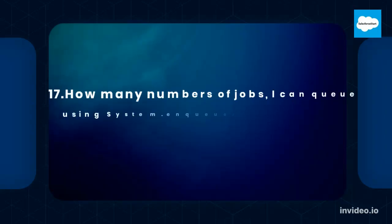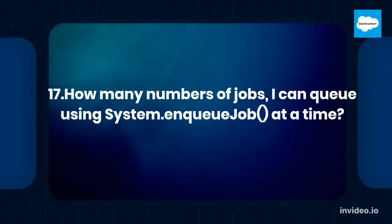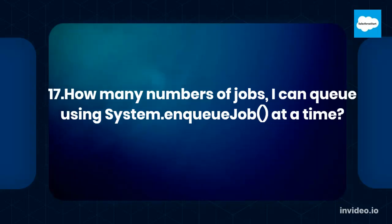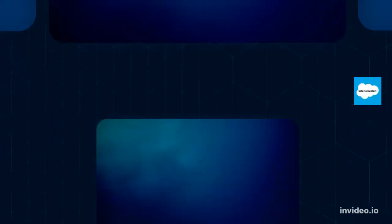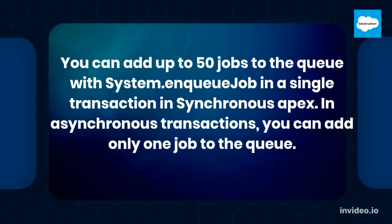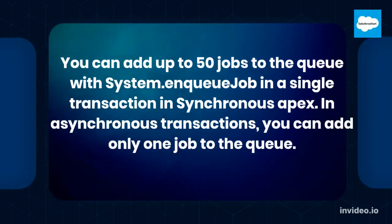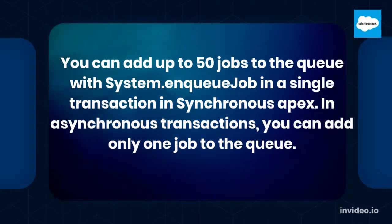How many jobs can I queue using System.enqueueJob at a time? You can add up to 50 jobs to the queue with System.enqueueJob in a single transaction in Synchronous Apex. In asynchronous transactions, you can add only one job to the queue.